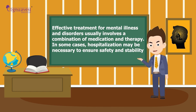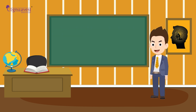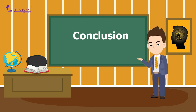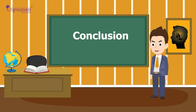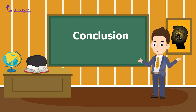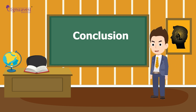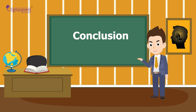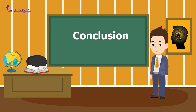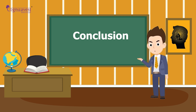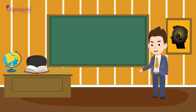In some cases, hospitalization may be necessary to ensure safety and stability. Abnormal psychology is a critical field of study that seeks to understand, diagnose, and treat mental health issues. By understanding the causes and symptoms of mental illness and disorders, we can work towards reducing the stigma associated with mental health and seek appropriate treatment when needed.